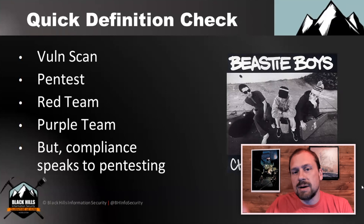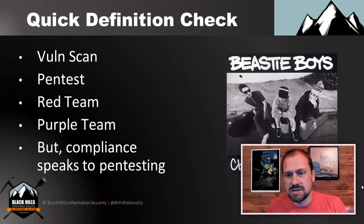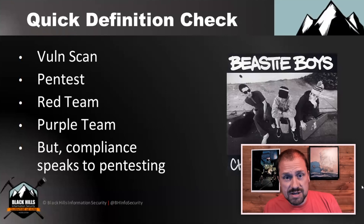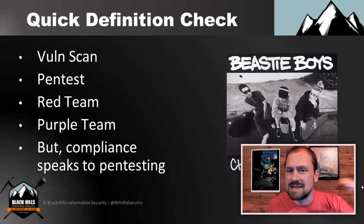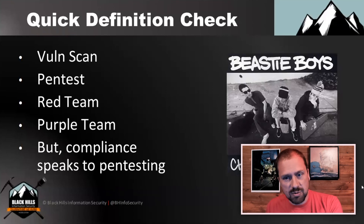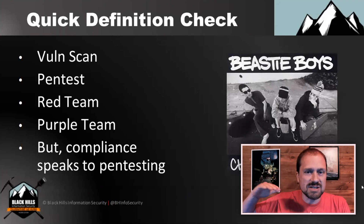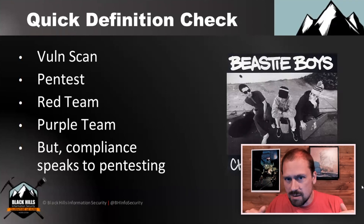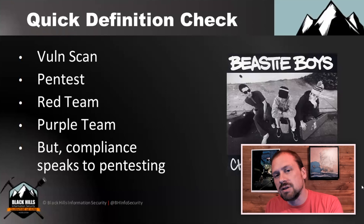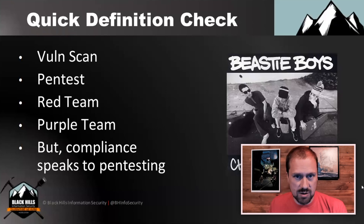A vuln scan is literally running a vulnerability scan, looking at the results, and fixing the issues. It's not crappy, it provides value — it just is what it is. A pen test is usually defined as one step up, at a bare minimum involving some level of exploitation to articulate risk to the organization.